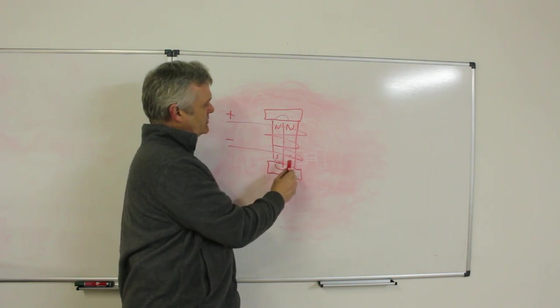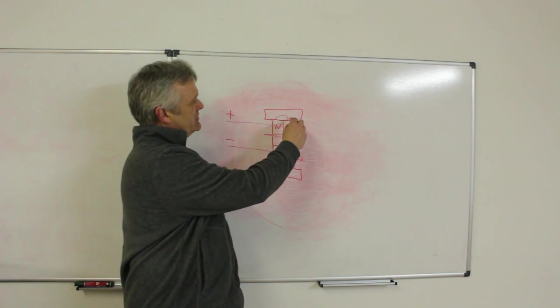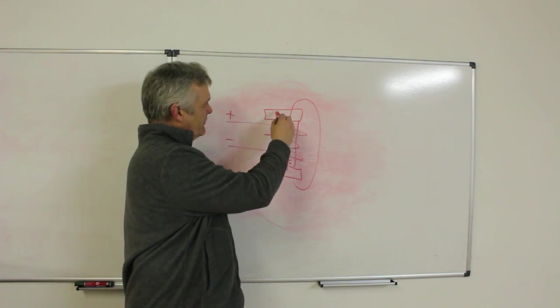So that will become north and that will become south. When that happens, the path of least reluctance is actually outside of the keepers. And our field goes like that.